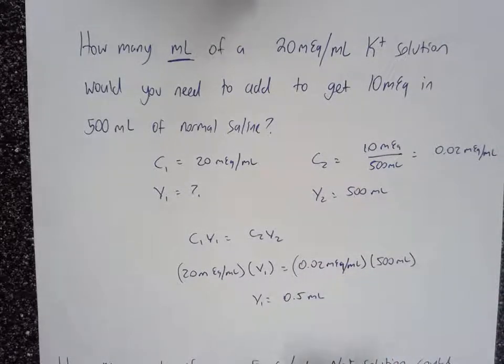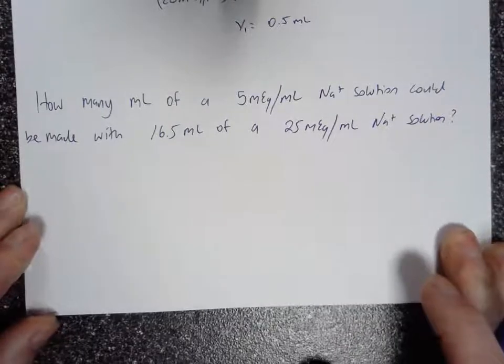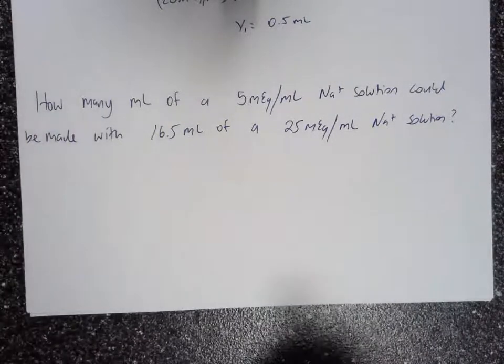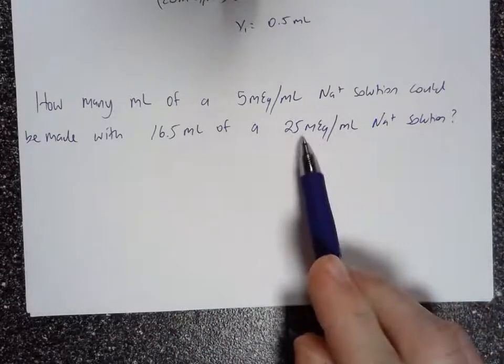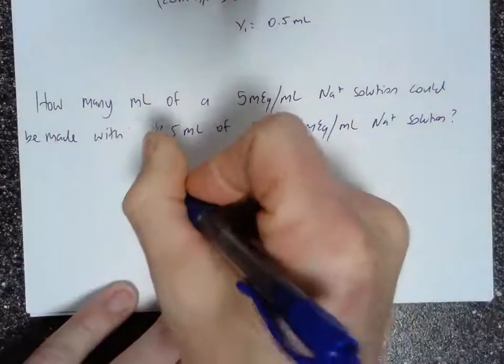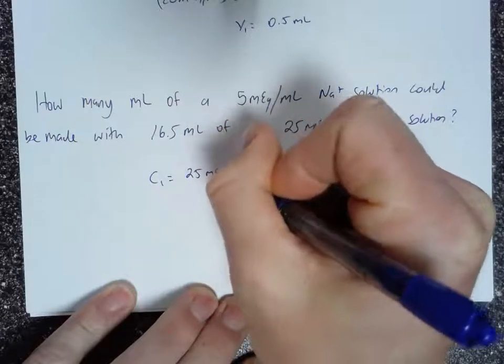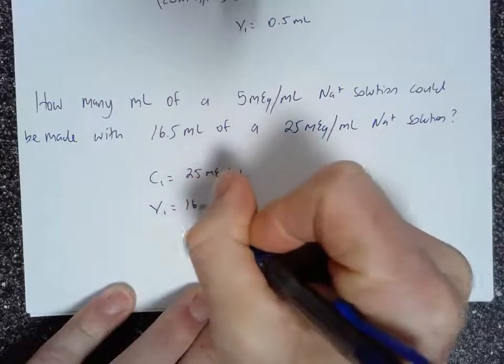And for the second problem, similar except I'm actually interested in the amount of final volume that can be produced from a given amount of stock. 25 milliequivalents per milliliter is the stock concentration, so that would be C1.